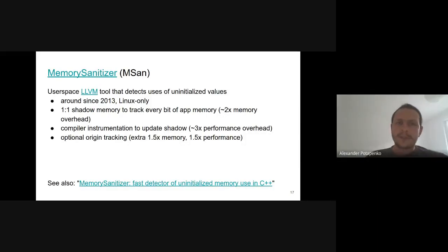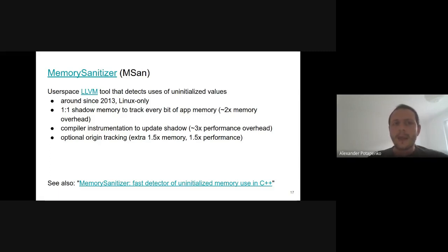In 2013 our team developed Memory Sanitizer, or MSan — a tool that detects uses of uninitialized values in user-space programs. MSan relies on a compiler instrumentation pass that inserts extra bug-checking code into programs, and a runtime library that helps maintain the program metadata. Every bit of application memory is tracked in so-called shadow memory. There is also an option to store information about the origins of uninitialized values.